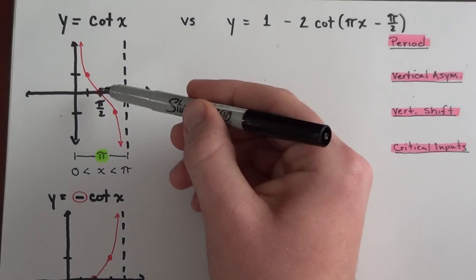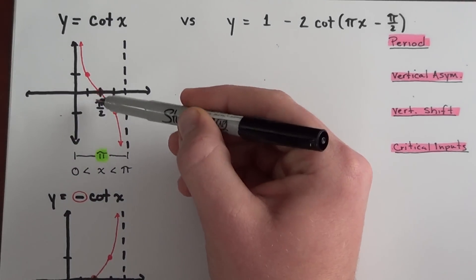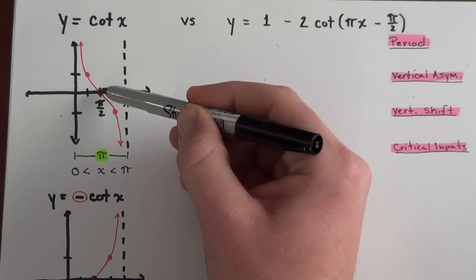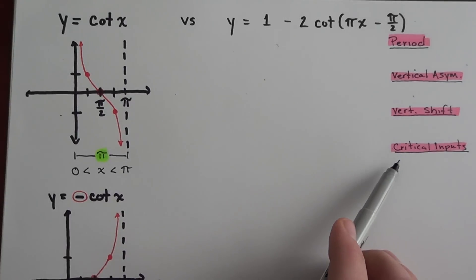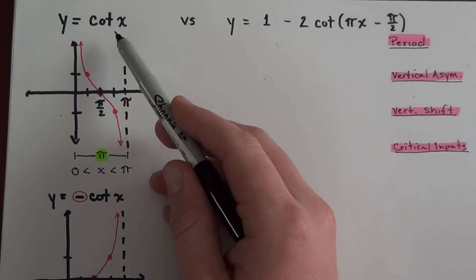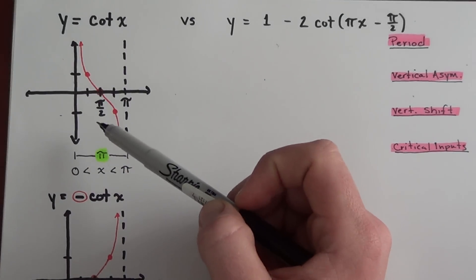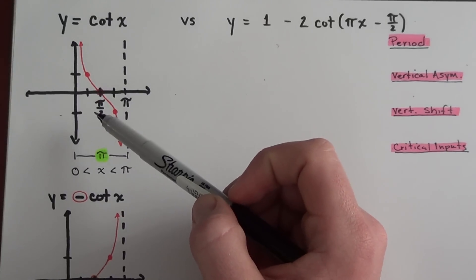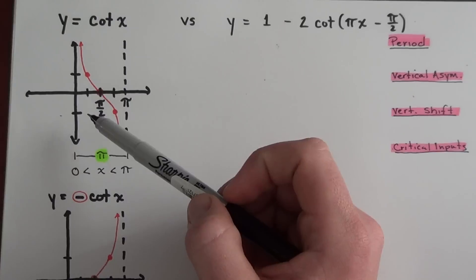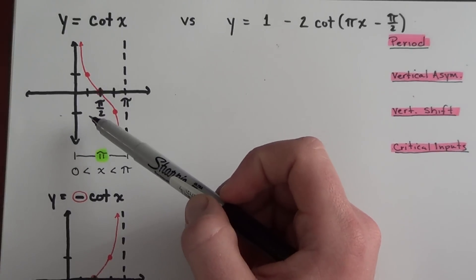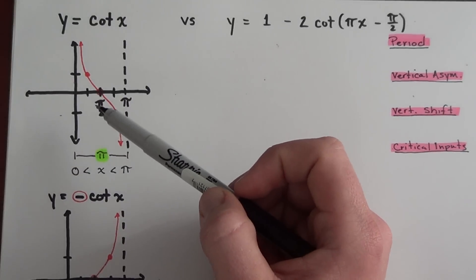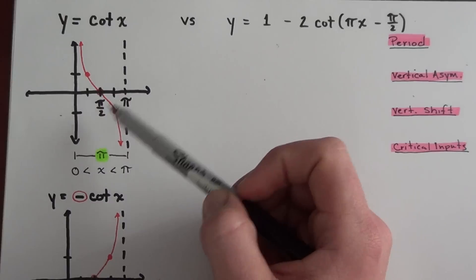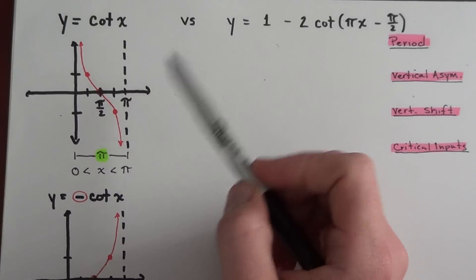The vertical shift tells me if a key point is going to move up or down. The last part I call the critical inputs — for y equals cotangent of x, these are the values that give me integer outputs when I take the cotangent of them. Integer outputs are important because they allow me to plot more accurate points on the graph.